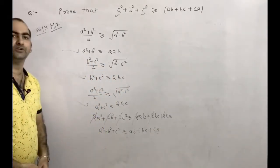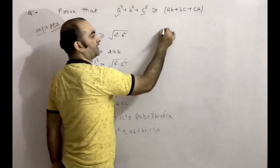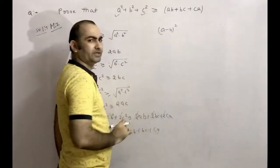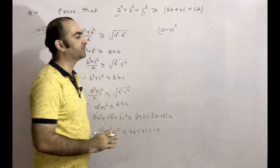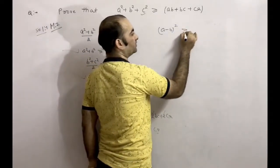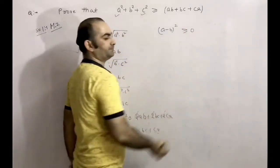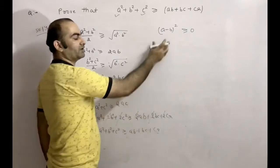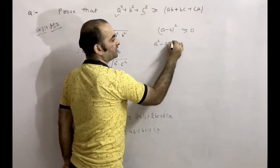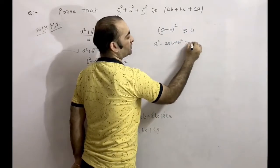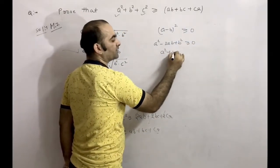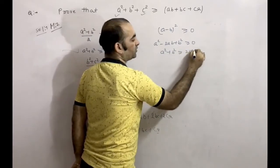Method 3: We know that (a - b)² is a perfect square, so (a - b)² ≥ 0. Expanding: a² - 2ab + b² ≥ 0, which gives a² + b² ≥ 2ab.